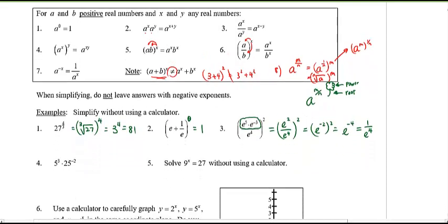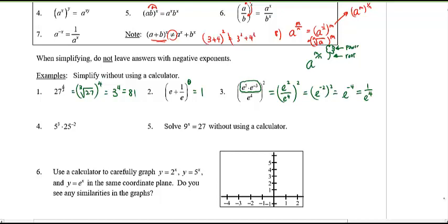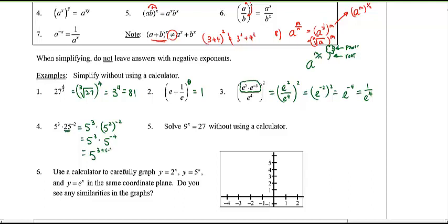Example 4: the bases aren't the same, so we have to make them the same. Notice that 25 can be written as 5 squared, raised to the negative 2. That simplifies because we multiply the exponents — the square and the negative 2 — together. Now we can add the exponents: that gives 5 to the negative 1, or just one-fifth.